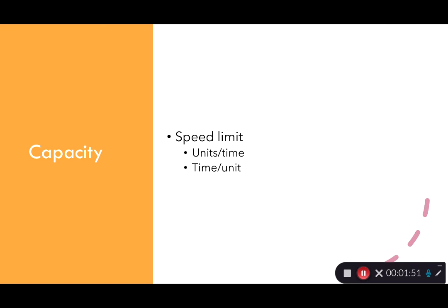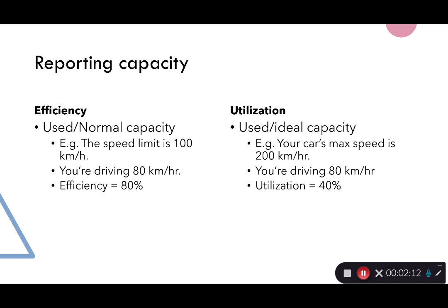With capacity, we talk about units per time — it might be customers per hour, or cars produced per month. Capacity is represented as a speed, as units per time. Every once in a while you'll also see the reciprocal, where capacity is presented as time per unit, but both of those are measures of speed — how fast can your operation run.